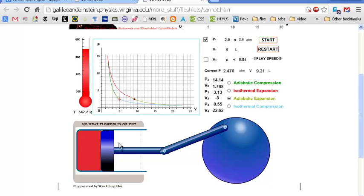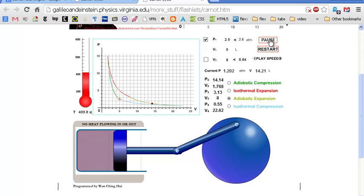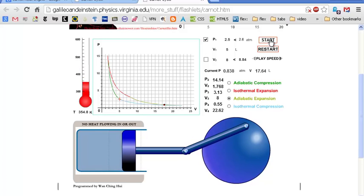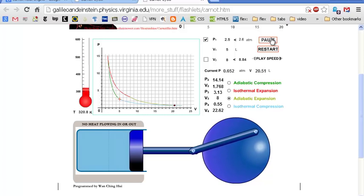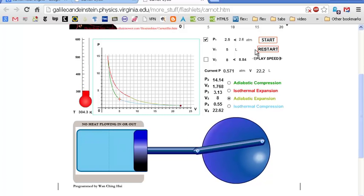Remember, adiabatic expanding a gas, the temperature of the gas is going to drop. So now the temperature goes down. And when it gets to that low point right there, we switch out the insulator and put in the low temperature reservoir, which is equal to 300 K, the temperature of the gas at that point.